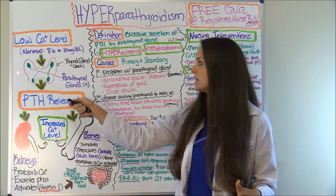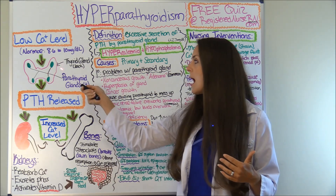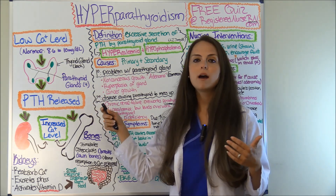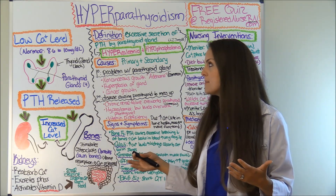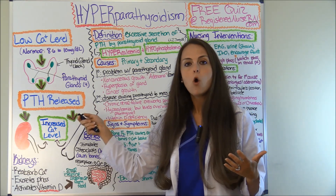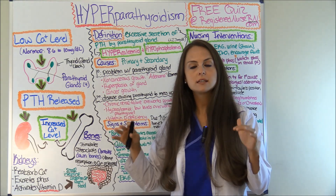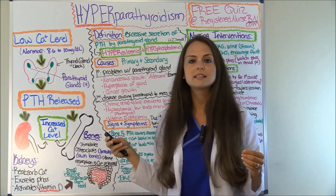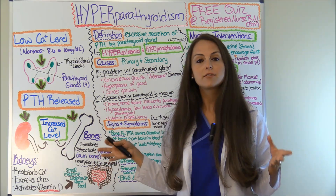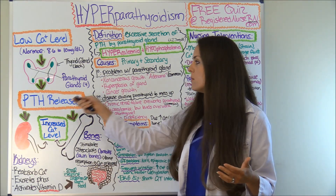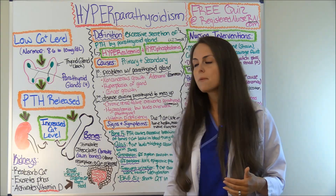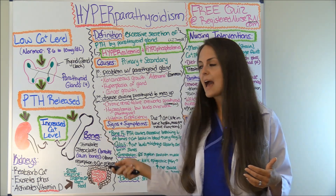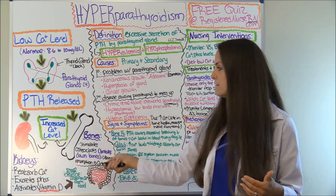Your parathyroid gland is found in your neck behind the thyroid gland. The pink area is your thyroid gland and the little green areas are your parathyroids — you have four of them. The parathyroid is stimulated whenever your body has a low calcium level in the blood. A normal calcium level is 8.6 to 10 milligrams per deciliter. So whenever it drops below 8.6, the parathyroid gland releases PTH to increase calcium levels.